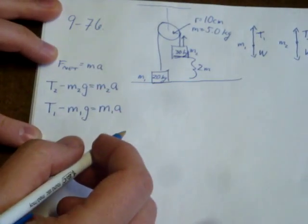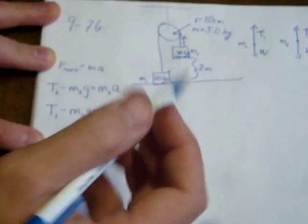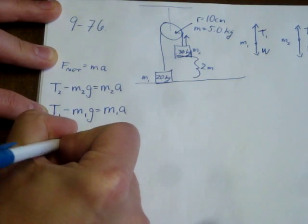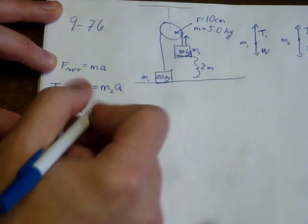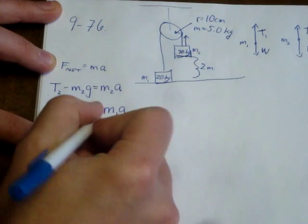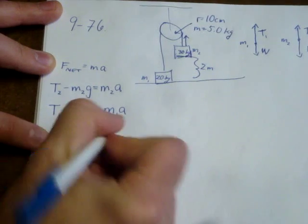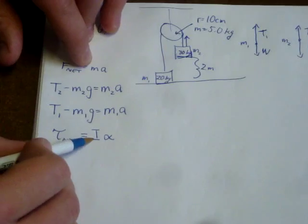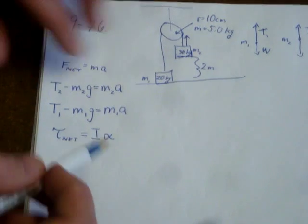The other Newton's second law that we can write is that for the rotational, the Newton's second law of rotation for our pulley. And the way that we wrote that in class is Newton's second law for rotation, instead of net forces, we would rely on net torque. And that's going to be equal to the moment of inertia of our rotating object times its angular acceleration, where the force to torque, mass to moment of inertia and tangential acceleration to angular acceleration.